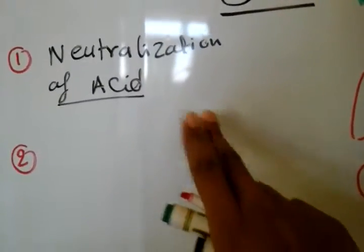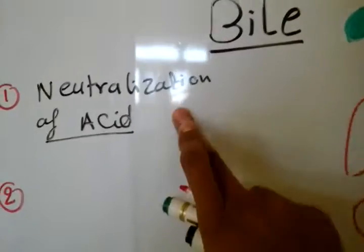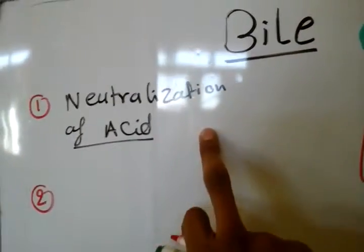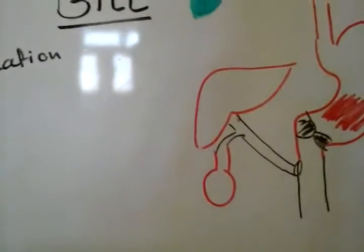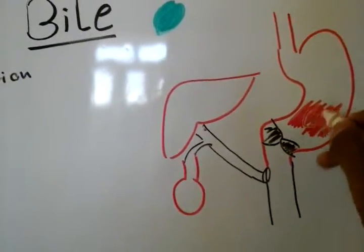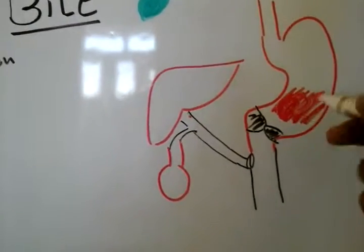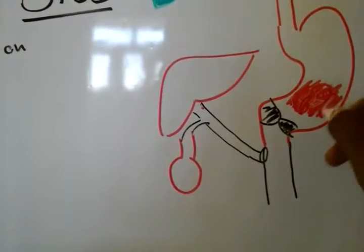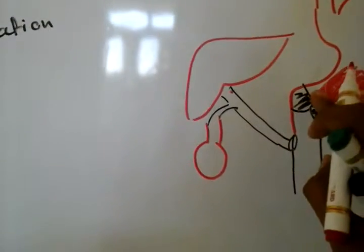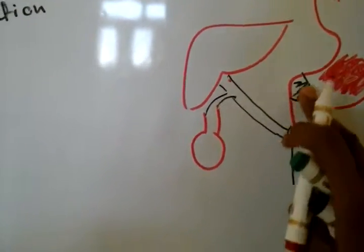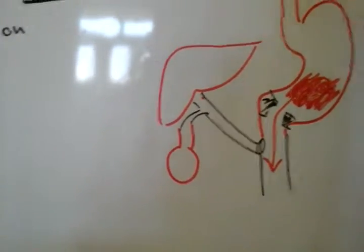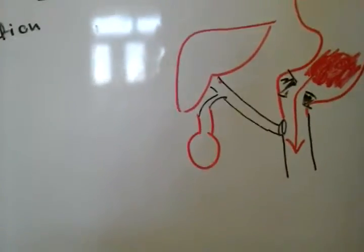The first function we'll talk about is neutralization of the acid — the acid of the chyme. In the stomach, the chyme, which is the food mixed with gastric acid, will come through the pyloric sphincter entering the duodenum, the first part of the small intestine.